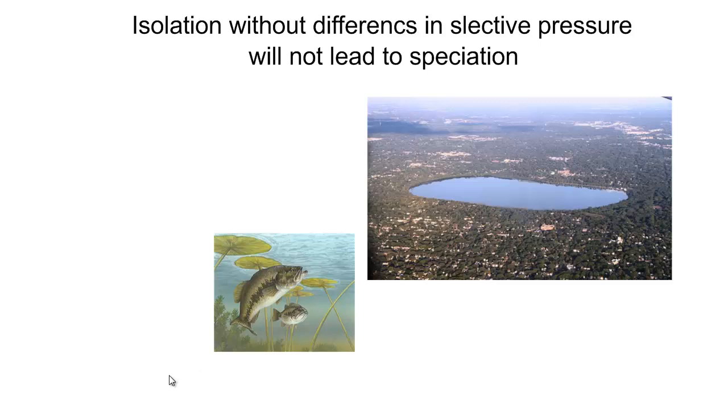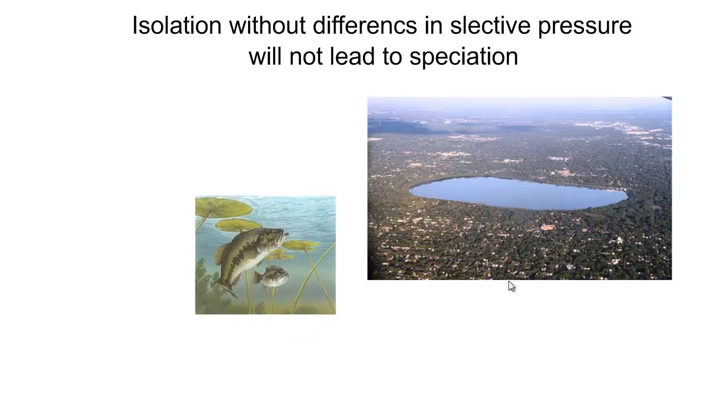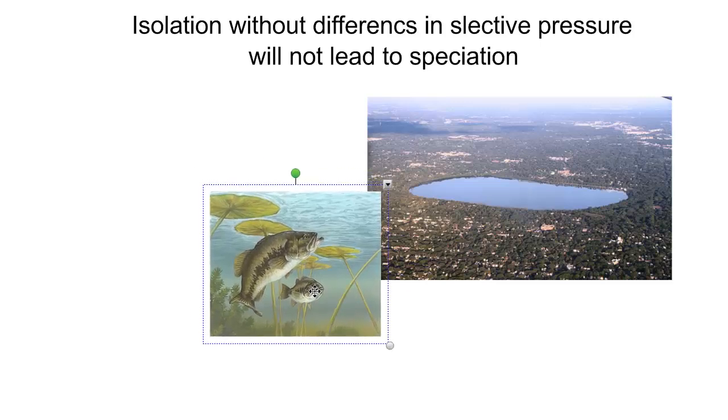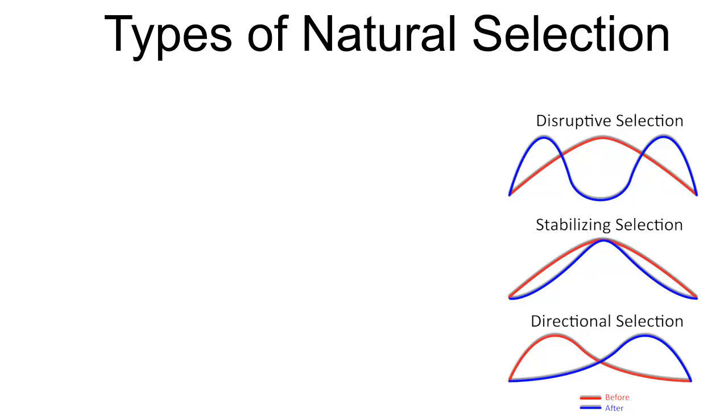Now, isolation without different selective pressures doesn't lead to speciation. So a quick example here. Here's an urban lake in Minneapolis, Lake Nokomis. And we think of a population of fish in there, largemouth bass. Well, there's plenty of lakes in Minnesota that also have largemouth bass and are isolated from Lake Nokomis. So why are the largemouth bass in Lake Nokomis not different from largemouth bass in Lake Mille Lacs or Potato Lake? And the reason for that is there's no difference in selective pressure. The pressures on the fish population here are essentially the same throughout the United States. So the largemouth bass species are relatively constant without a whole lot of variation, and it's because there's no difference in the selective pressure.